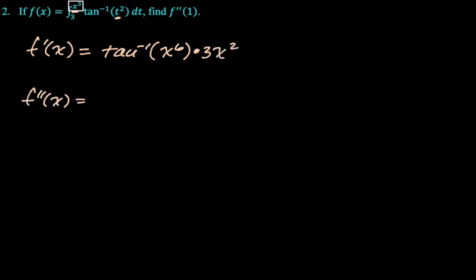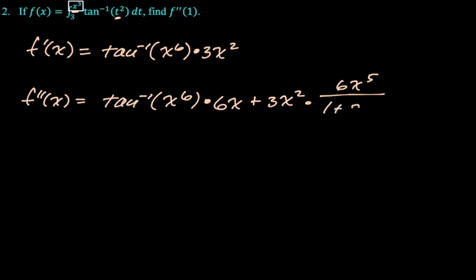That's f prime, but we need f double prime. So f double prime is going to be a product rule, right? Because it's a product. So we're going to get first, derivative of the second is 6x, plus second, which is 3x squared, derivative of the first. So this is the derivative of arc tan with a chain rule involved. So it's 1 plus u squared times the derivative of u. So it's 1 over 1 plus x to the sixth squared. So 1 over 1 plus x to the 12th times the derivative of x to the sixth, so that's times 6x to the fifth.